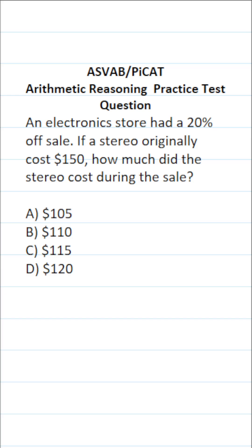This arithmetic reasoning practice test question for the ASVAB and PiCAT says an electronics store had a 20% off sale. If a stereo originally cost $150, how much did the stereo cost during the sale?